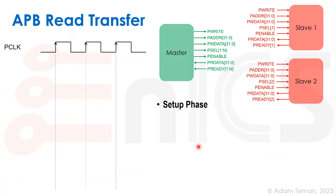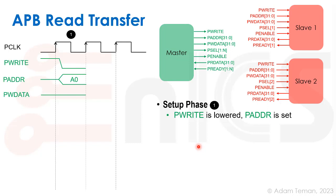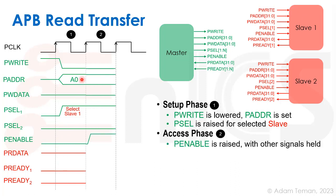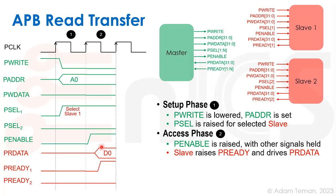A read transfer is very similar. In the setup phase, PWRITE is low to indicate a read, the address is set on PADDR, but PWDATA is not driven since we're requesting data, not writing it. One slave is selected via PSEL and PENABLE is kept low. In the second cycle — the access phase — all signals are held stable and PENABLE is raised, telling the selected slave to perform its operation. The slave then drives PRDATA with the read data and raises PREADY as an ACK indicating the data is valid.